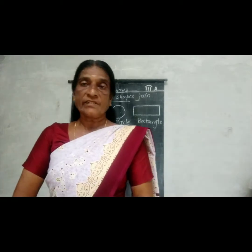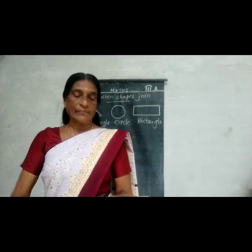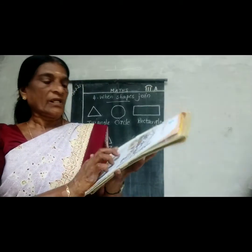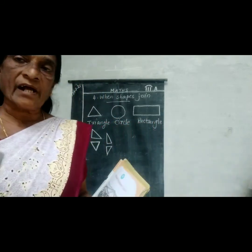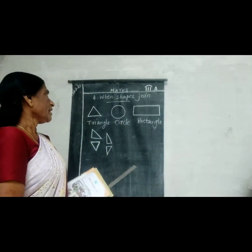This is a simple chapter. First of all, you see, here a picture is given. I will read — listen. Look at the picture. Can you say what are the geometric shapes in the picture? These are geometric shapes.